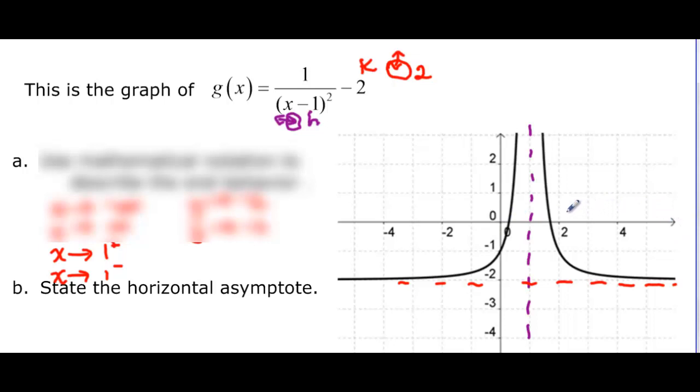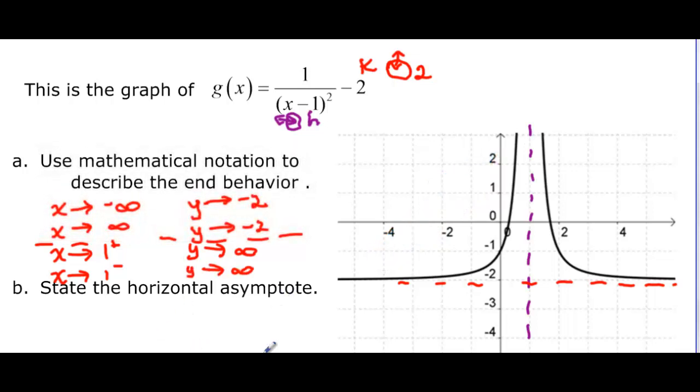So as x comes here and approaches negative one on the positive side, so on the right-hand side of the vertical asymptote, we can see this thing is going to positive infinity. It's going up forever. So y is approaching positive infinity. And as it approaches from the negative side, this time instead of being negative infinity, it's again going to positive infinity. So if we want to state the horizontal asymptote, then that would be our horizontal line. So y is negative two.